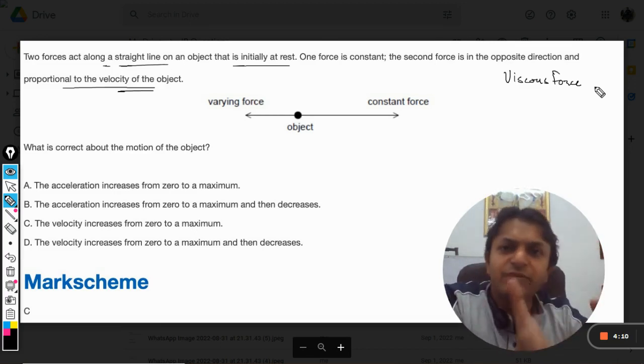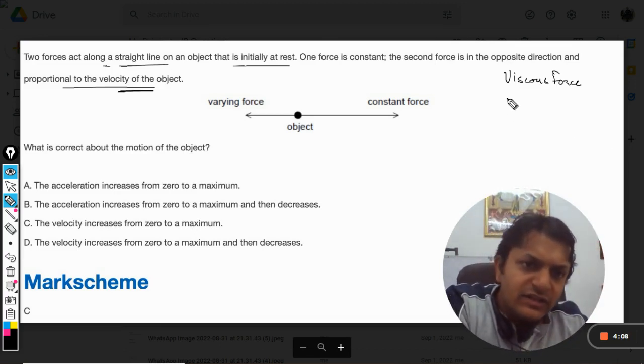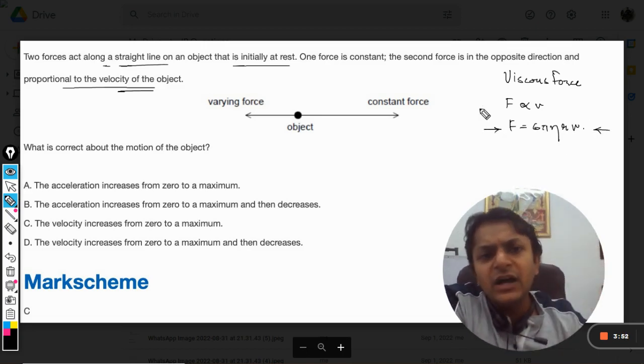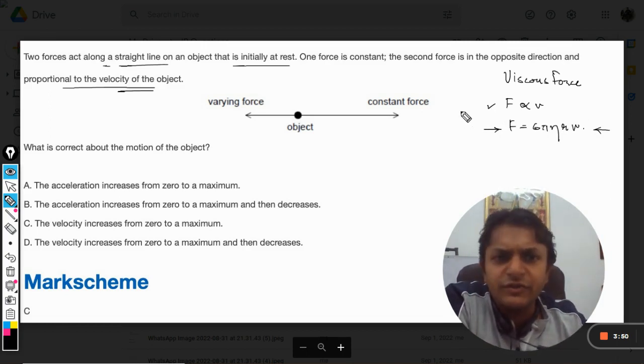Now, there is a general formula that F is directly proportional to v. So the formula that we derive later is 6πηrv. So IB students need not venture into this much detail. This much will suffice, I will say.